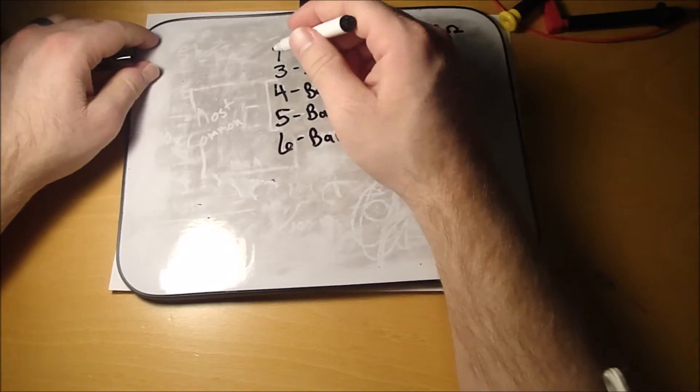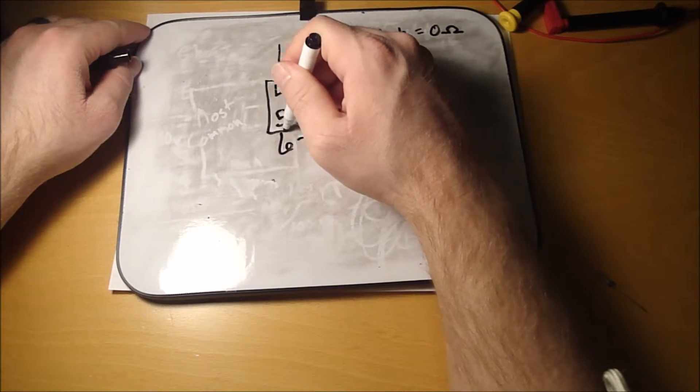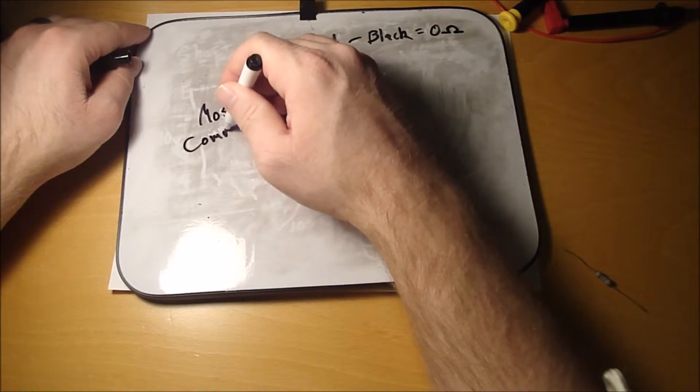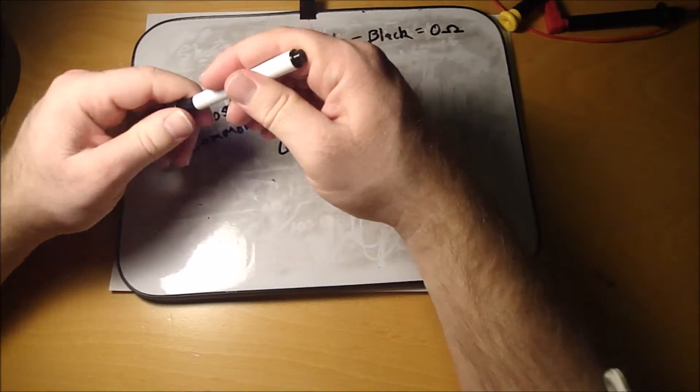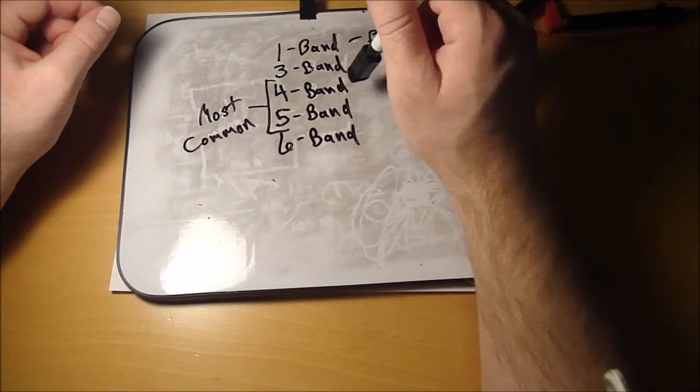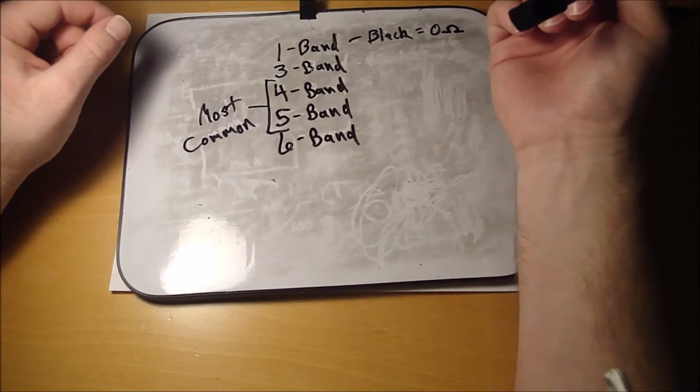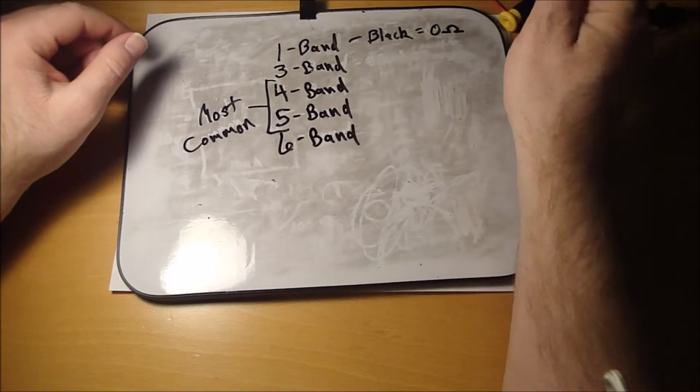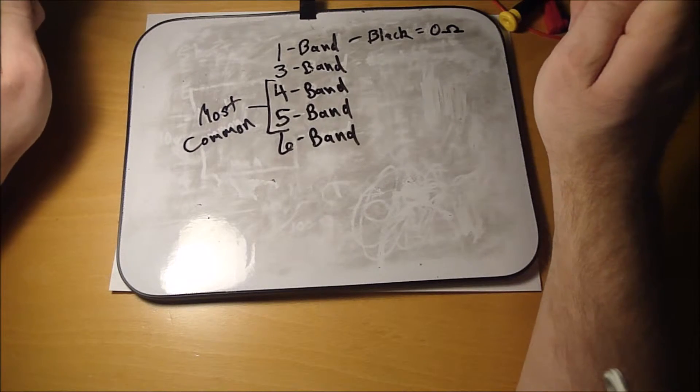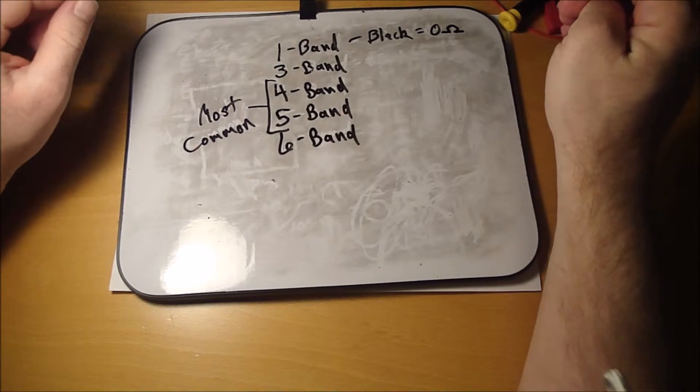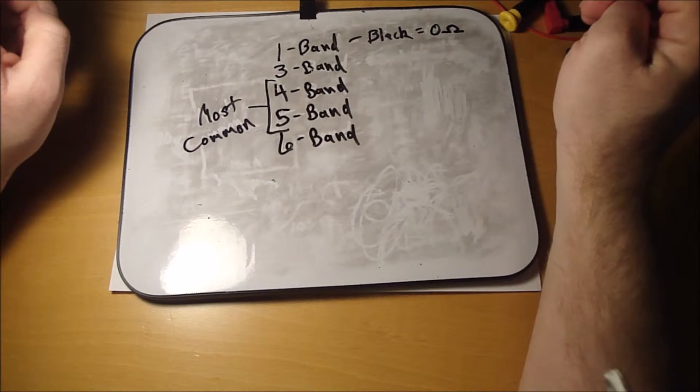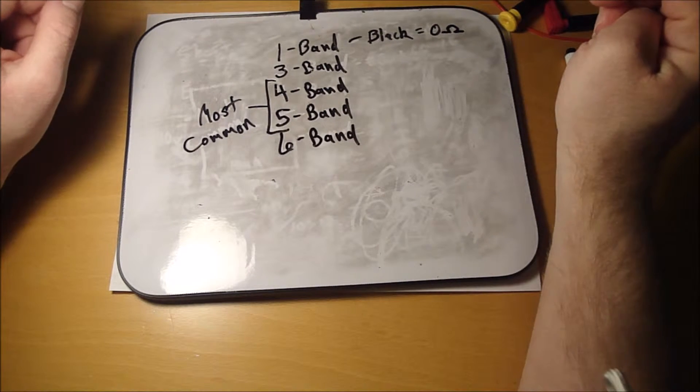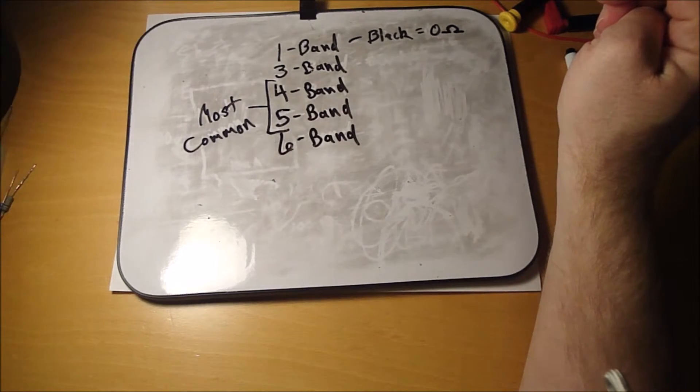The most common resistors I see are the four and five band. I typically only see those in power supplies on the newer electronics, and then older electronics, they're scattered all over the place. The newer electronics are going more to surface mount, but the power supplies need to handle more current draw and more power dissipation, so they still have to use the through hole resistors.